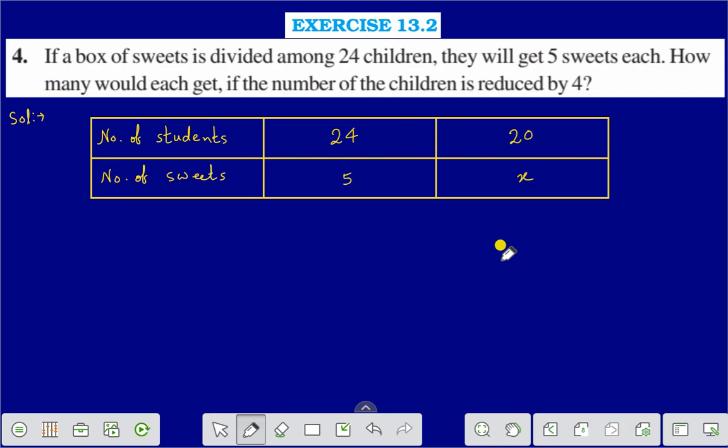If a box of sweets is divided among 24 children, they will get 5 sweets each. How many would each get if the number of children is reduced by 4?